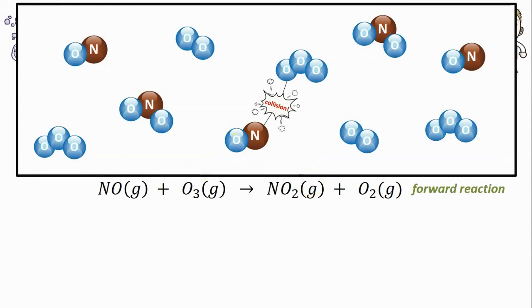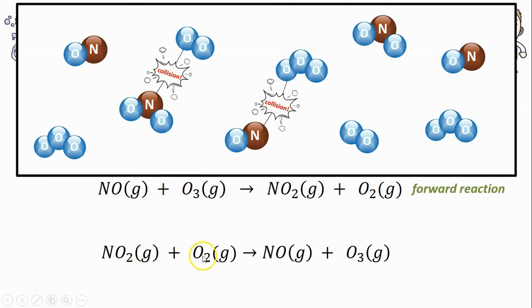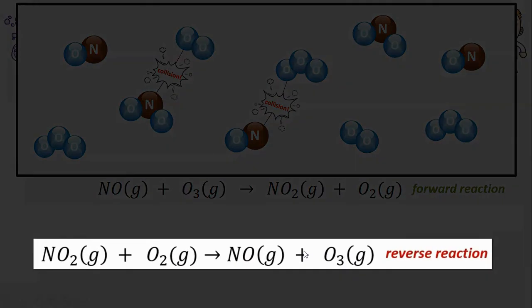But also in this container, I've got NO2s and O2s, and sometimes they'll be colliding with each other. And like we saw before, if an NO2 collides with an O2, it's going to turn back into the reactants, NO and O3. Since this is the reverse of the reaction, the way it's written here, we call that the reverse reaction.